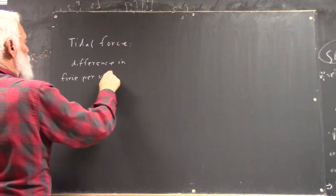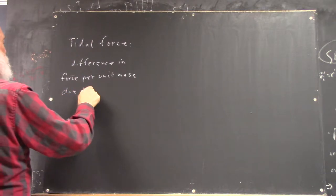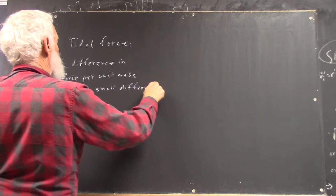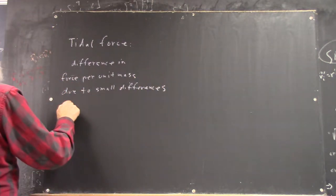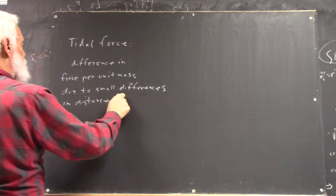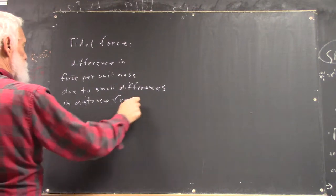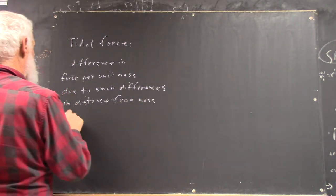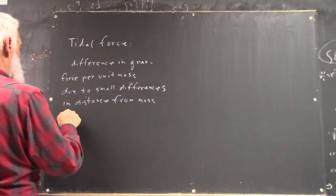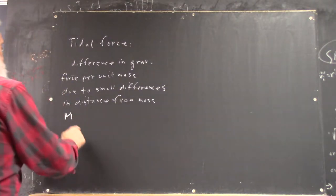I'm going to say it's the difference of the force per unit mass due to small differences in the distance from a gravitational mass m. And it's the difference in the gravitational force. Okay?